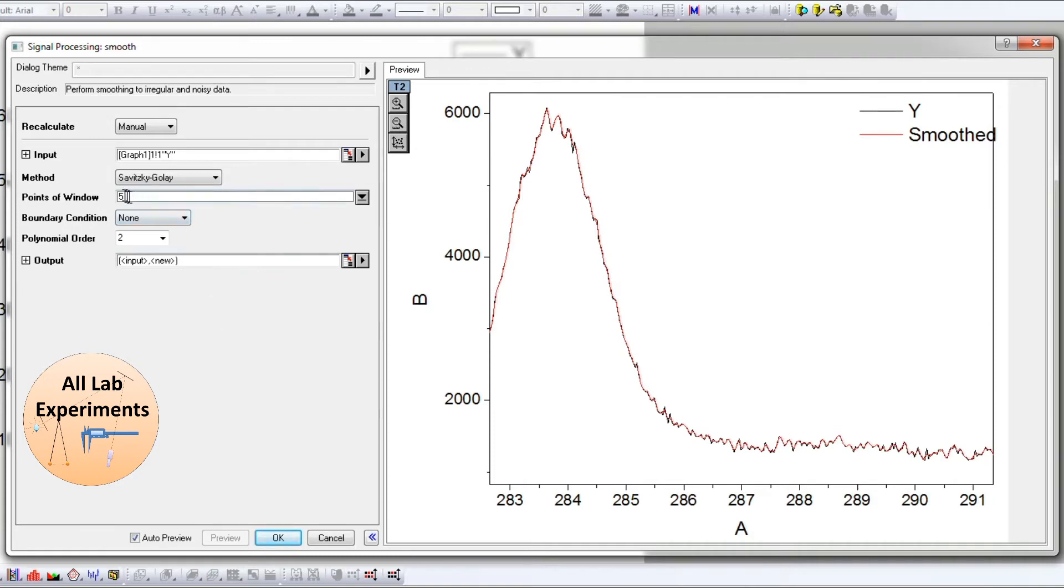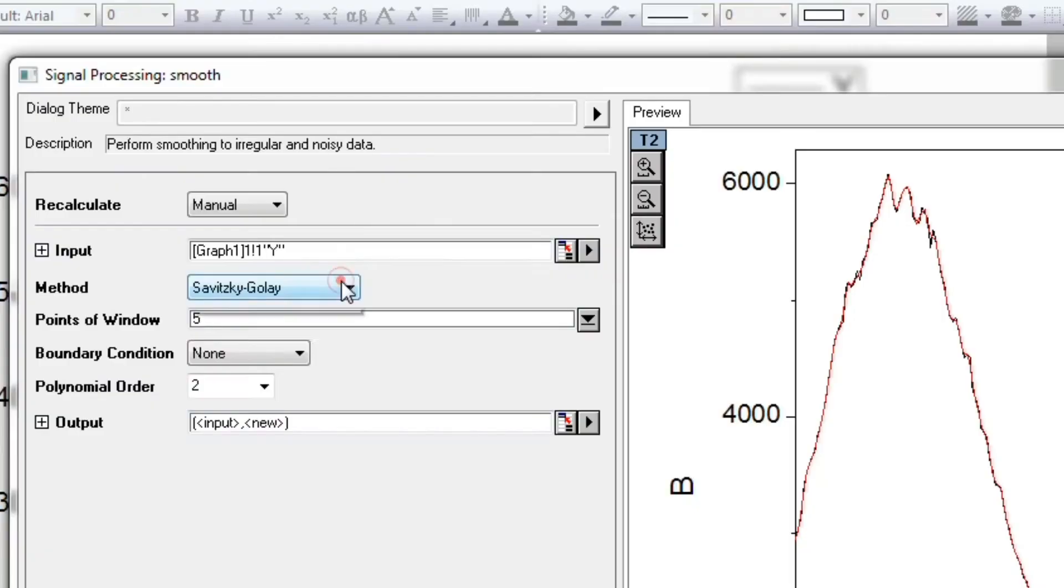Smoothing is just a five to ten second job. If I just adjust this number and press OK, I will get a smooth curve, but we should know up to what extent we can smooth a curve.